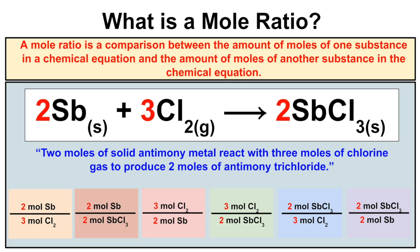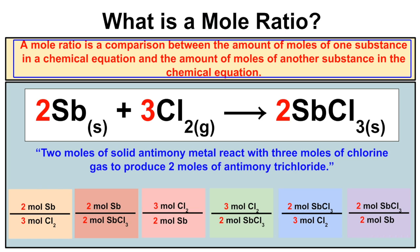What is a mole ratio and how does it work? A mole ratio is a comparison between the amount of moles of one substance in a chemical equation and the amount of moles of another substance in that same chemical equation. For example, this chemical equation tells us that two moles of antimony react with three moles of chlorine to produce two moles of antimony trichloride. These coefficients mean moles — they tell you the amount of moles of each substance.